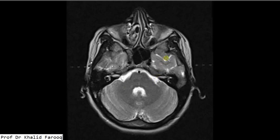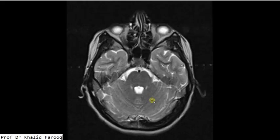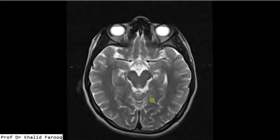Here we have the axial T2 sequence. We can see pons, basilar artery, pre-pontine cistern, seventh and eighth nerve complexes, fourth ventricle and cerebellum, and the middle cerebellar peduncles on either side.